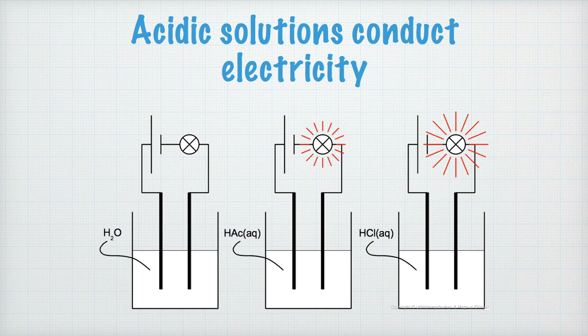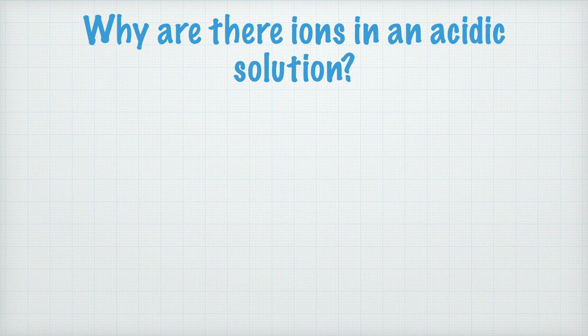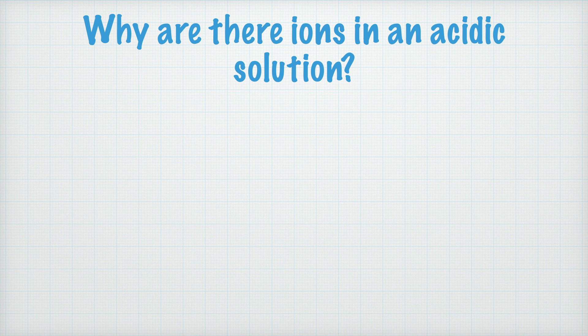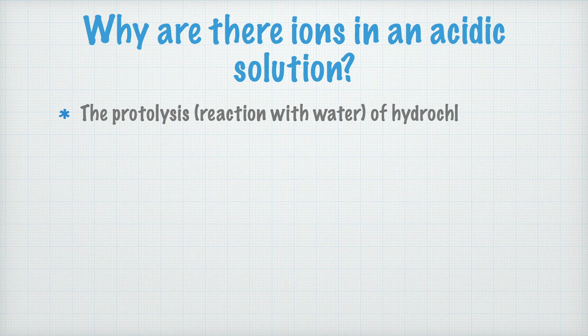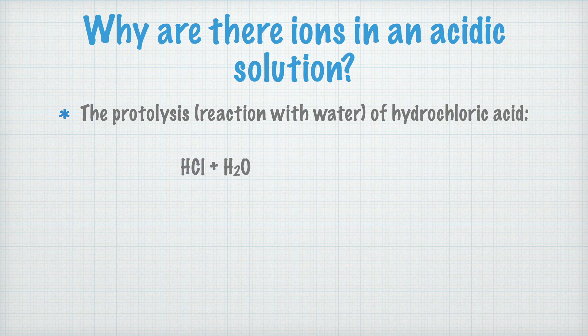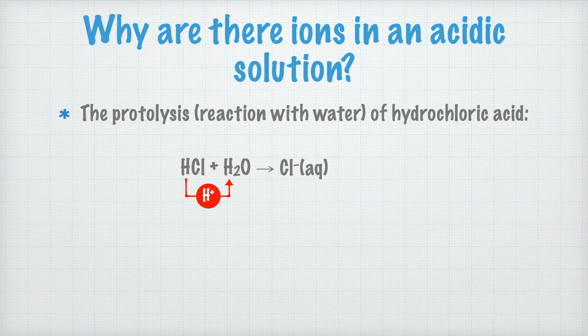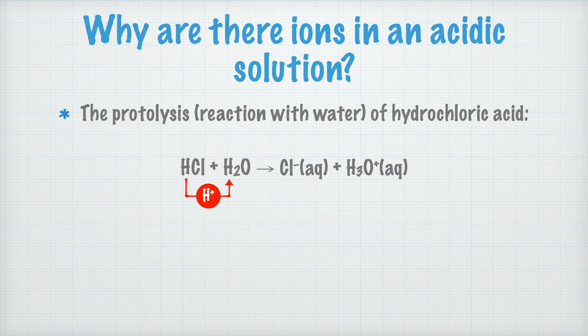If acidic solutions can conduct electricity because there are ions in them, we must ask this follow-up question: Why are there ions in an acidic solution? To explain that, I want to show you what happens when hydrochloric acid is proteolyzed, that is, it reacts with water. Hydrochloric acid, that's HCl that has been dissolved in water. So we write here HCl plus H2O. What happens is that hydrogen ion H+ is given off from the hydrochloric acid. It is instead taken up by the water molecule in this way. What's left of the hydrochloric acid is just a chloride ion, Cl-, and the water has turned into H3O+. The H3O+ ion is called a hydronium ion.